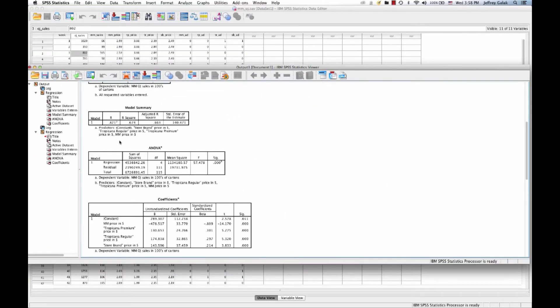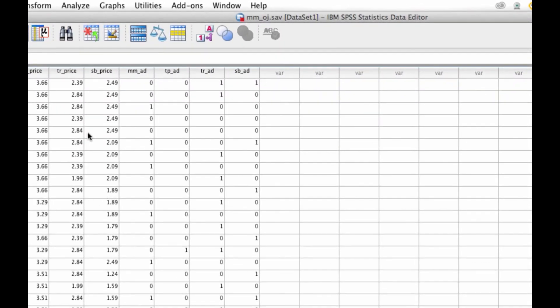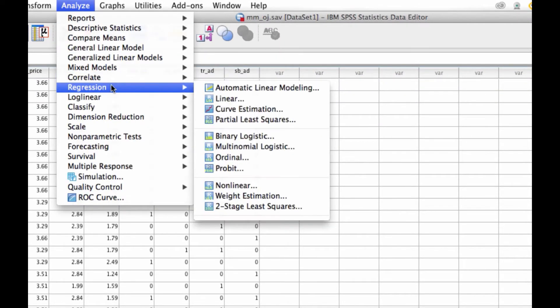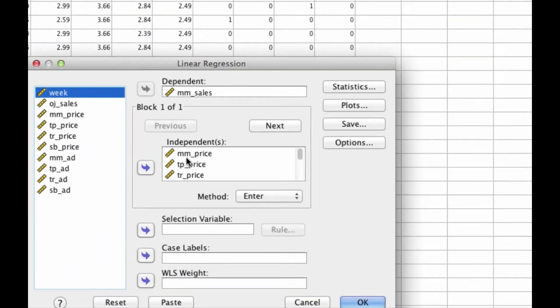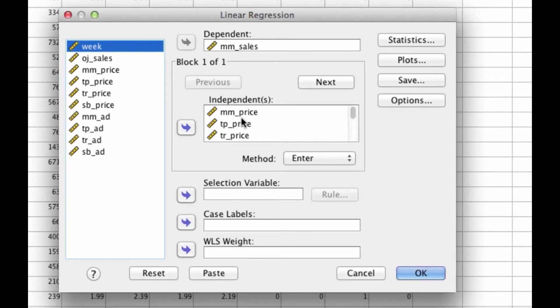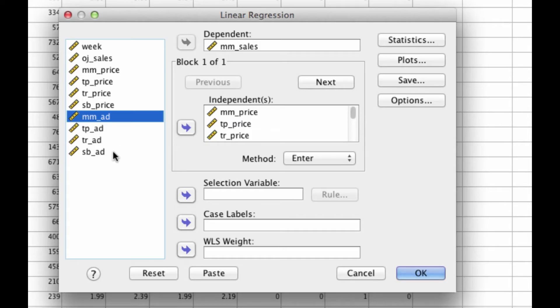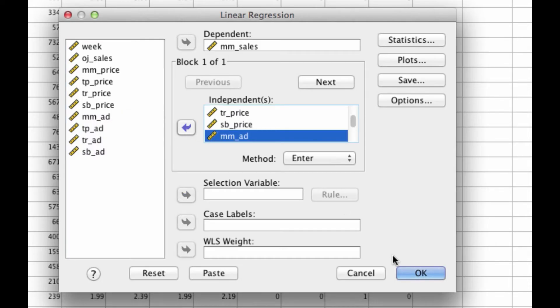But we actually have even more than this. We also have the advertising behavior of myself, my brand, as well as the competitor brands. So why don't we include those in the regression as well? We go to Analyze, Regression, Linear. And in addition to these prices, what we want to include are these four variables here, which are the presence or absence of ads by me, Minute Maid advertising, and my competitors, these three below. So I select them, move them over, and I hit OK.